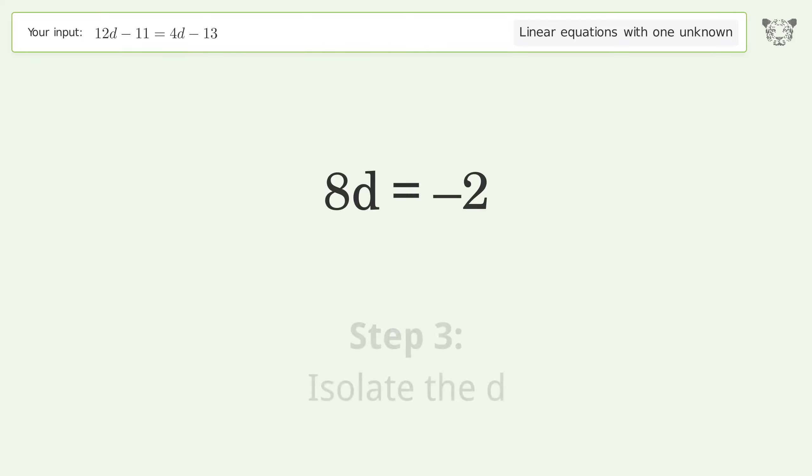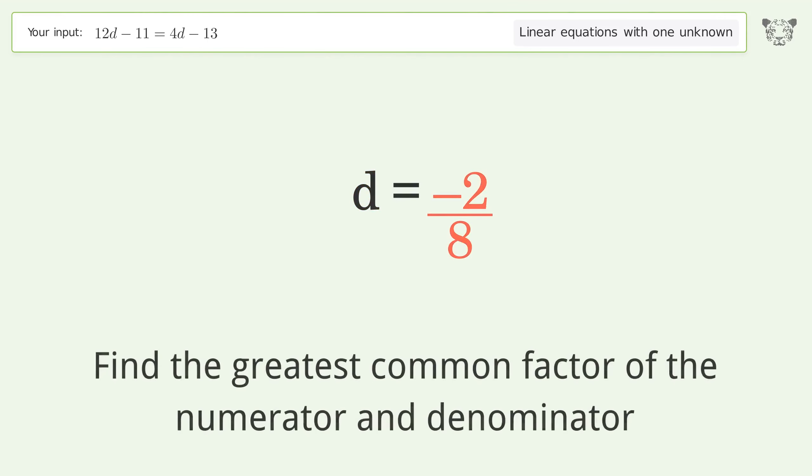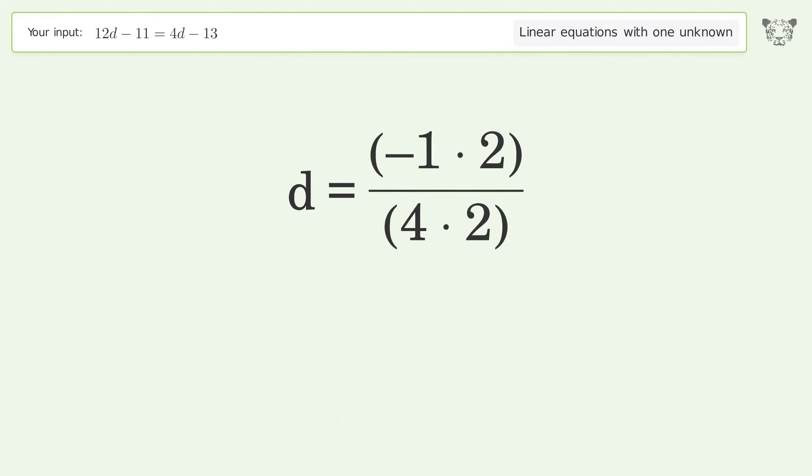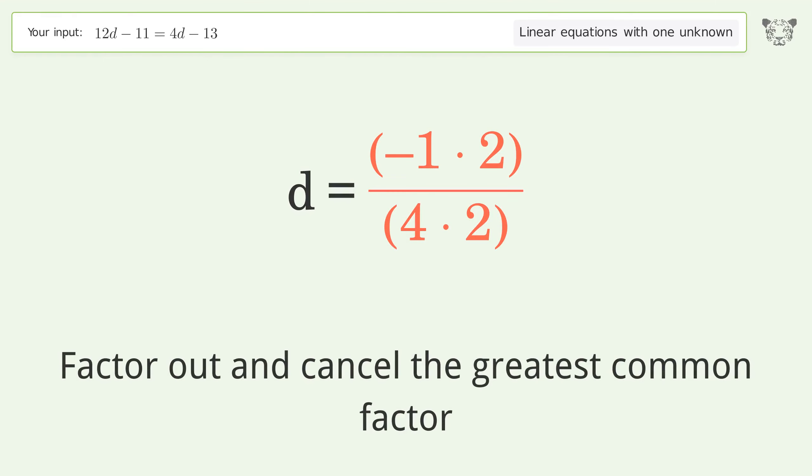Isolate the d. Divide both sides by 8. Simplify the fraction. Find the greatest common factor of the numerator and denominator. Factor out and cancel the greatest common factor.